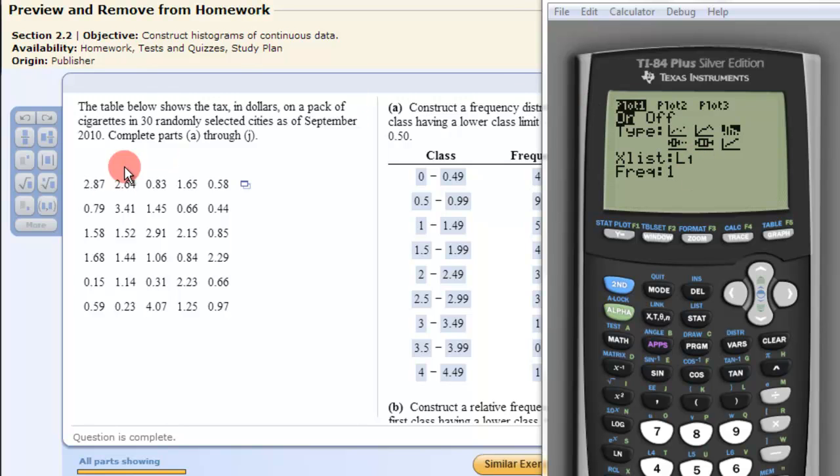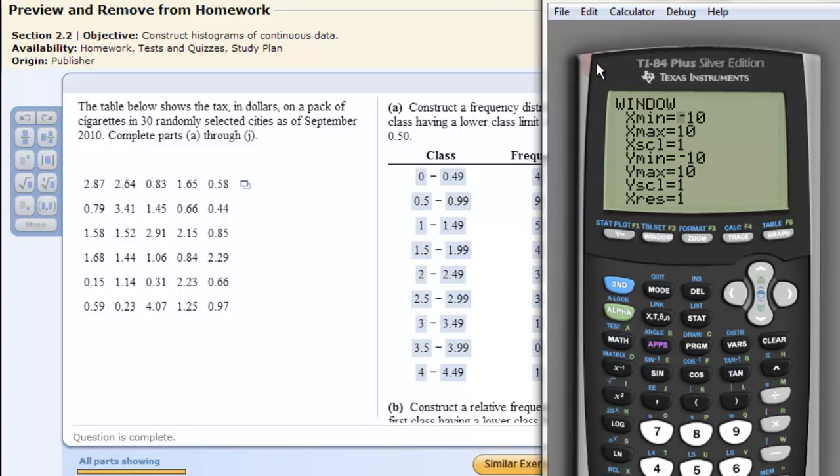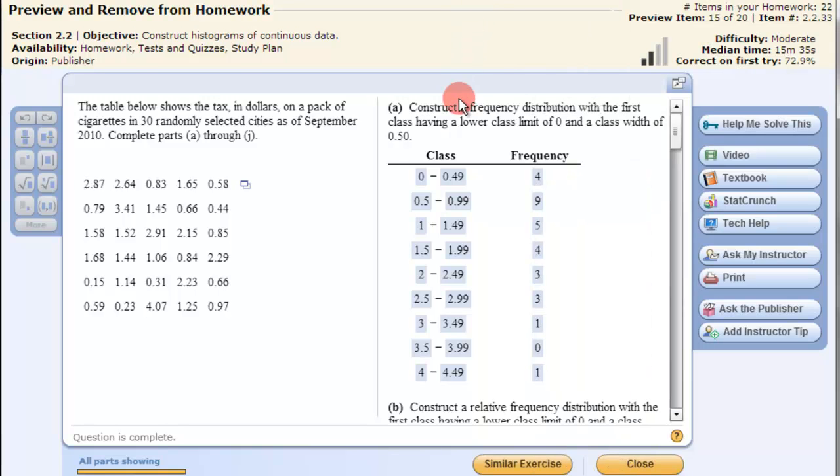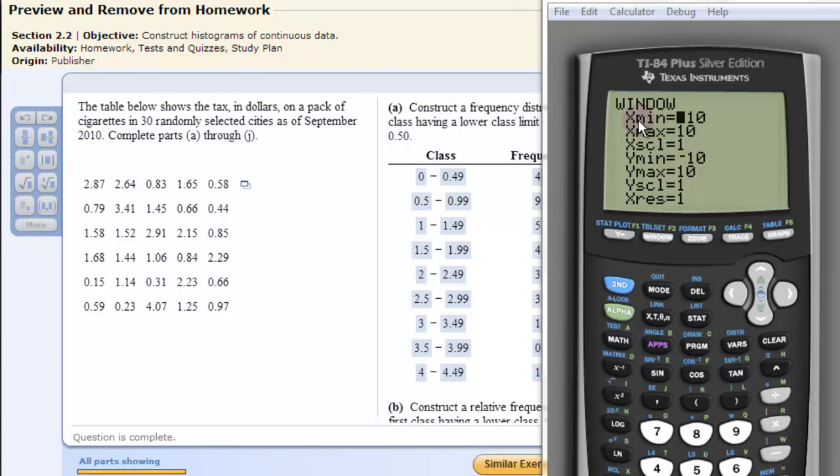Now that that's complete we need to create the classes. The class width or the over here. And that's done in the window. So I click window. Let's go back here. It says construct a frequency distribution with the first class having a lower class of 0 and a class width of 0.5. So that's what the X minimum will be. The 0. So I'll type 0 into there.